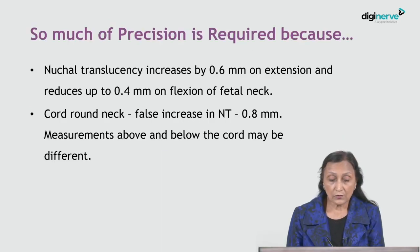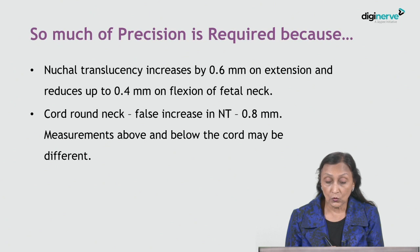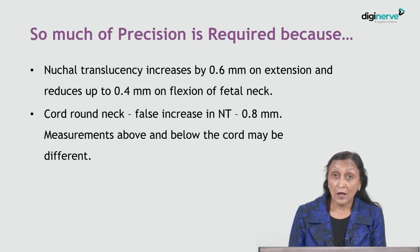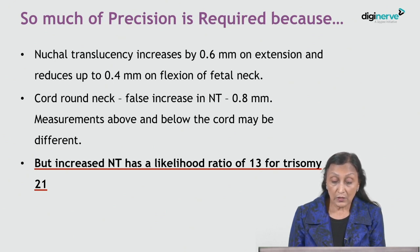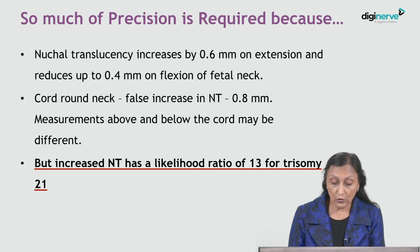Such precision is required because nuchal translucency increases by 0.6 mm on extension of the head and decreases by 0.4 mm on flexion of the neck. If there is a cord around the neck, there is a false increase of 0.8 mm in the measurement, and values above and below the cord may differ. Despite these pitfalls, increased nuchal translucency has a likelihood ratio as high as 13 for Trisomy 21.